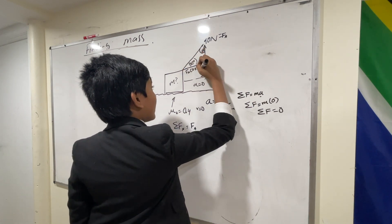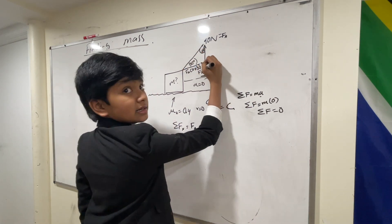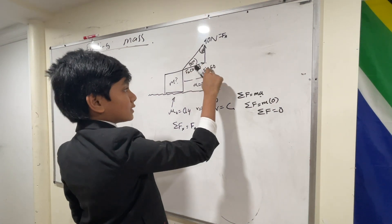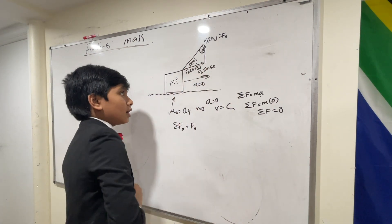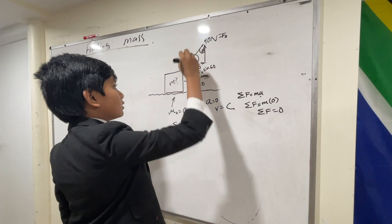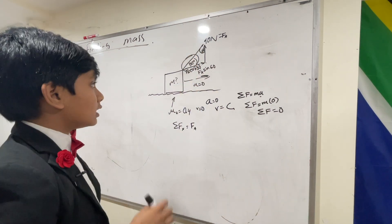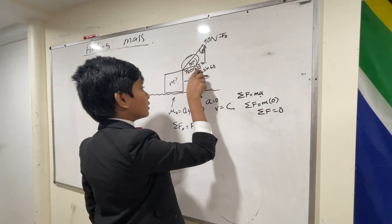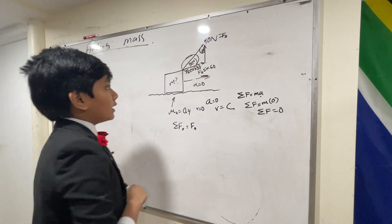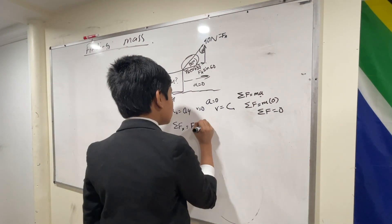These two are the same thing, by the way. But usually you will be given the angle to the horizontal, not the vertical. So keep in mind this one, not this one. Okay. All right. So we have f a cosine 30.